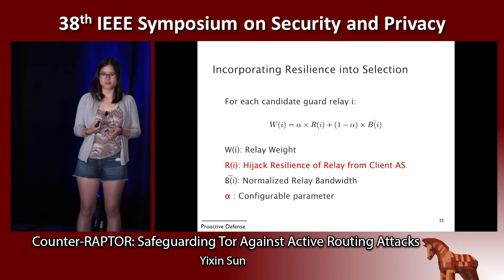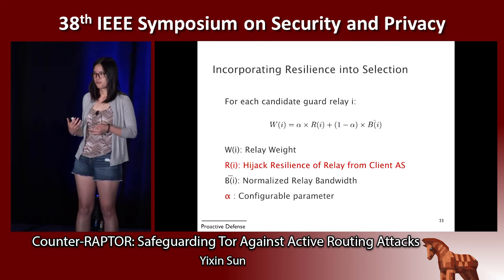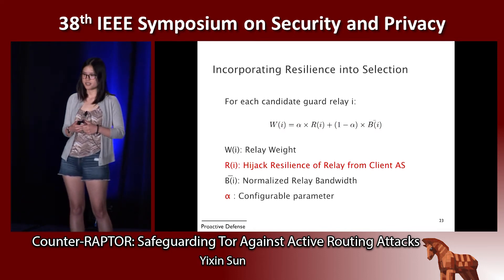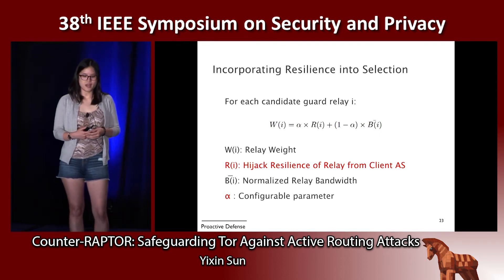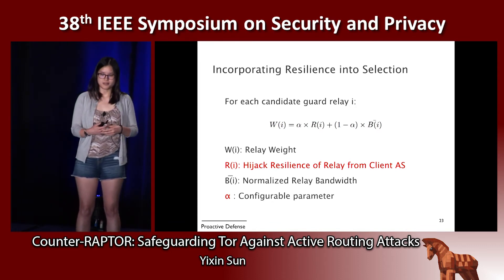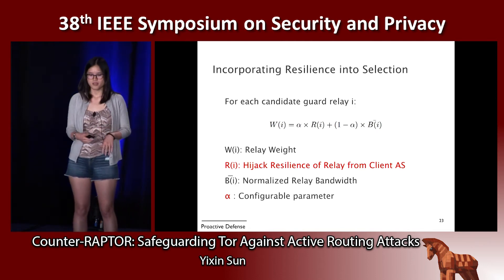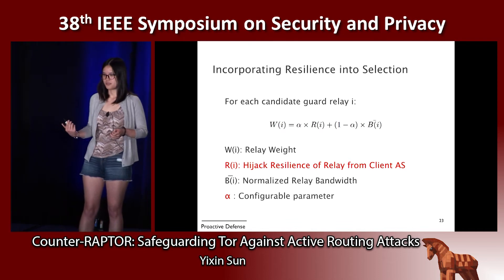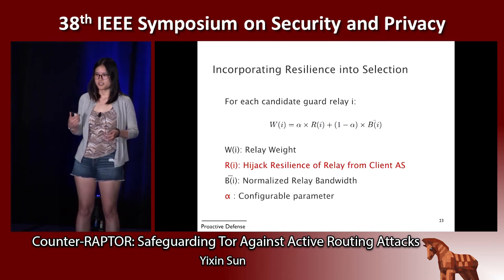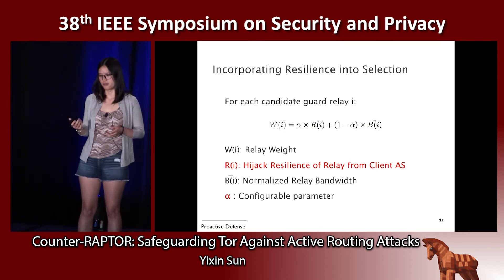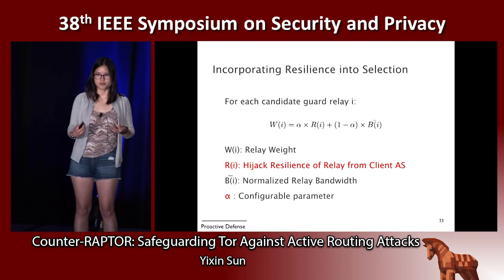To incorporate resilience into relay selection, for each guard relay we compute a new weight that combines the hijack resilience of the relay from the client AS as well as the bandwidth of the relay. We also have a configurable parameter alpha indicating how much weight to put on resilience versus bandwidth. When alpha equals zero, we are not considering resilience at all — the algorithm becomes the same as the current vanilla Tor relay selection, which is bandwidth only.